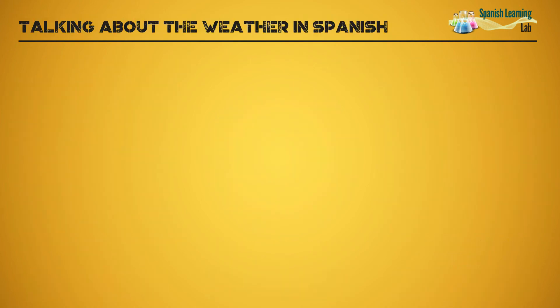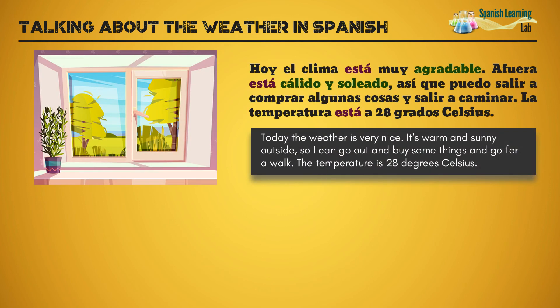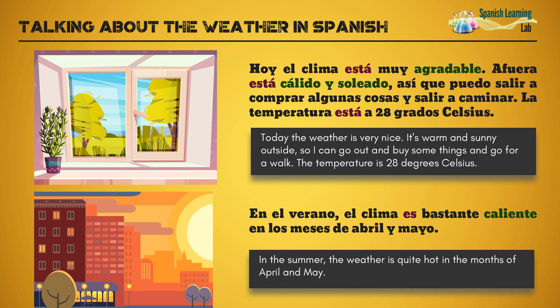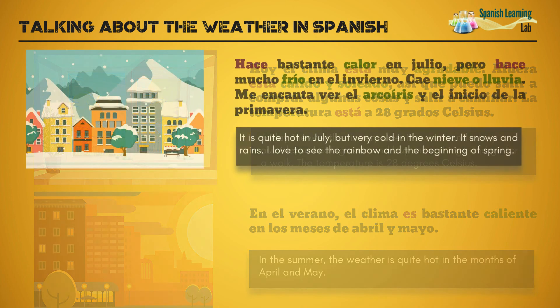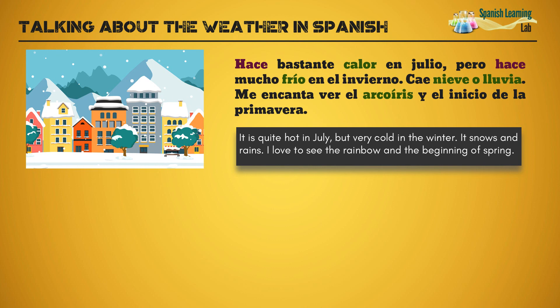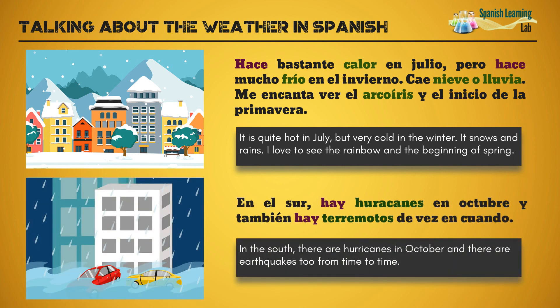Let's put all the previous pieces together in one last example combining grammar and vocabulary. Try to identify everything we have explained so far. Hoy, el clima está muy agradable. Afuera está cálido y soleado, así que puedo salir a comprar algunas cosas y salir a caminar. La temperatura está a 28 grados Celsius. En el verano, el clima es bastante caliente en los meses de abril y mayo. Hace bastante calor en julio, pero hace mucho frío en el invierno. Cae nieve o lluvia. Me encanta ver el arco iris y el inicio de la primavera. En el sur, hay huracanes en octubre y también hay terremotos de vez en cuando.